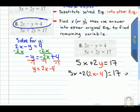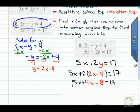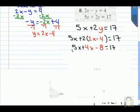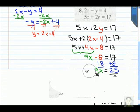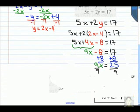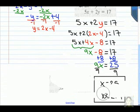Once you have set up this step, then you are going to distribute the 2 times 2x minus 4, and bring everything else down. Next, you are going to combine like terms. And after that, you are going to add 8 and finally divide by 9. Thus giving you the exact answer of x equaling 25 over 9 or approximately 2.7.